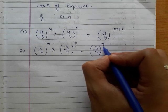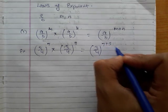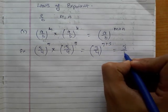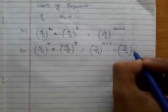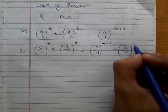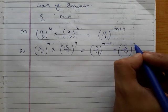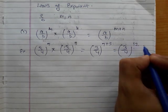Here we will add 7 plus 5. So the answer becomes 3 over 4 raised to the power 7 plus 5, which equals 12.